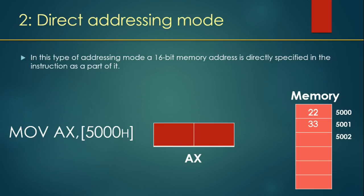Next is direct addressing mode. In this mode, a 16-bit memory address is directly specified in the instruction as part of it. You want to copy from or to a memory location, and that address is given along with the instruction. As you see in the example MOV AX, 5000 — this 5000 is the address in memory where the data is taken from.